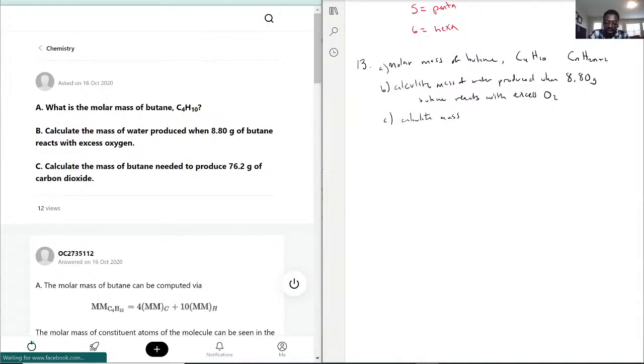And C: calculate mass of butane needed to produce 76.2 grams of carbon dioxide.